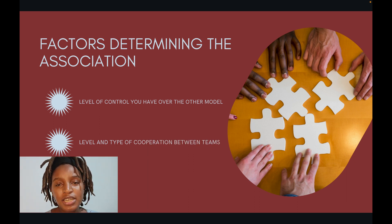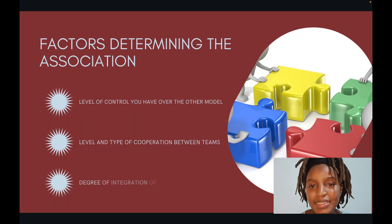Another factor is the level and type of cooperation between teams. You can't have a shared kernel with teams you don't easily work with — for instance, where managers are far apart or they're in very different departments. Even a customer-supplier relationship can be tricky in that sense. Knowing this will influence what type of context mapping you go with.